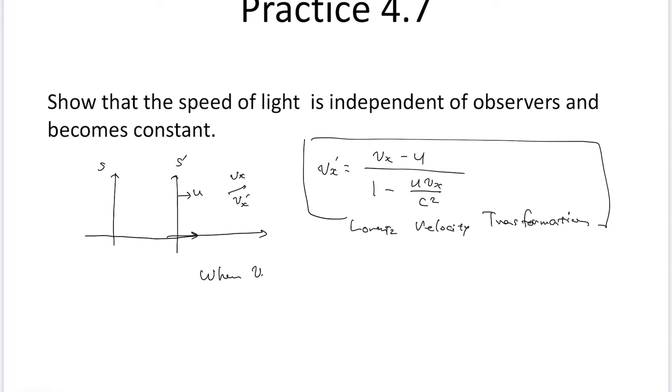So in this case, Vx equals c. So if you're on the frame of S, then observe the light, the speed is c. Vx is the speed of c. What does the observer in S' frame observe?